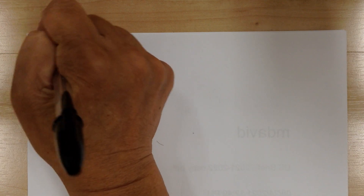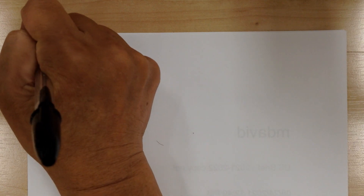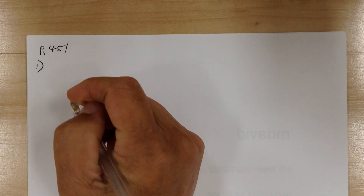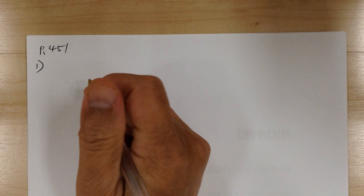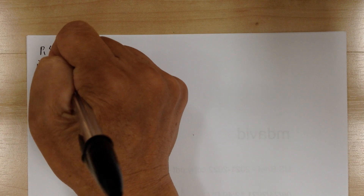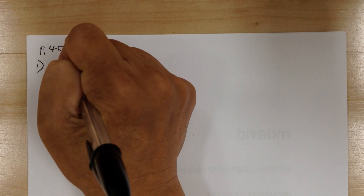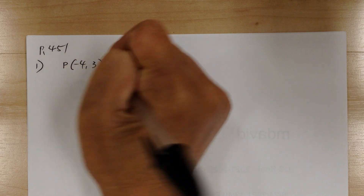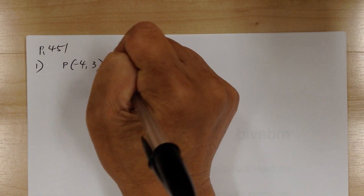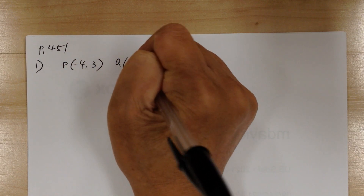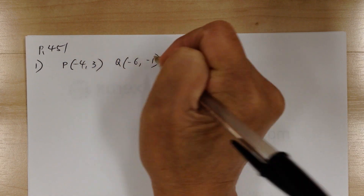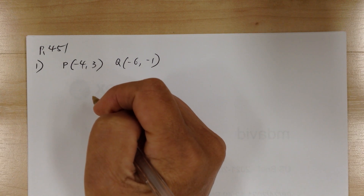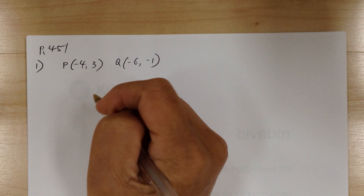Let's go to page 451 and start with number 1. You have two points: point P at negative 4, 3, and Q at negative 6, negative 1. Number 1, find the distance between P and Q.